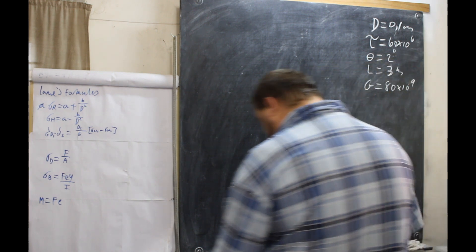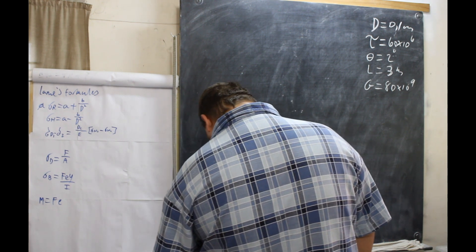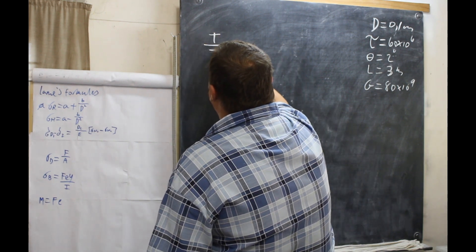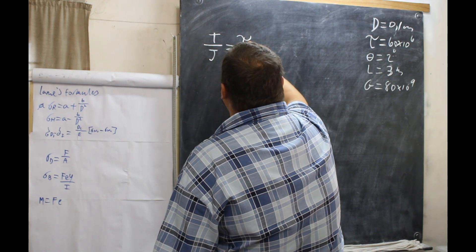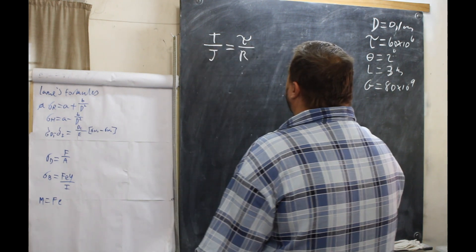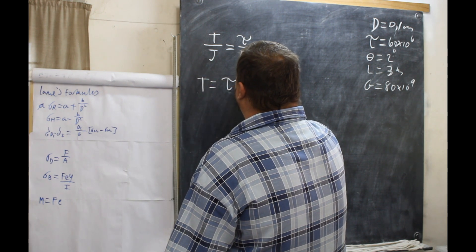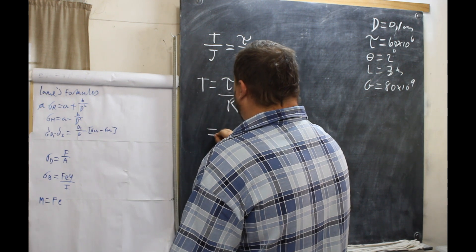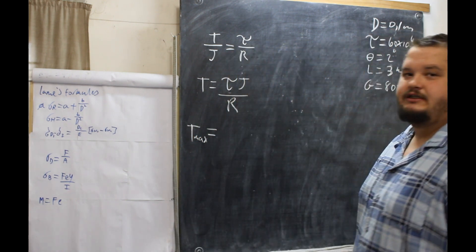First things first — they want us to calculate the maximum torque the shaft can transmit. So we use T/J = shear stress/R. Rearranging for torque: T equals shear stress times J over R. This gives us T maximum.